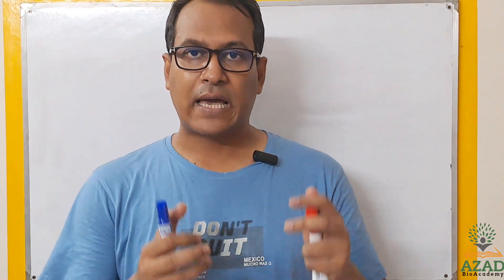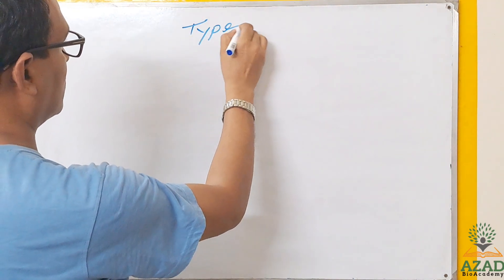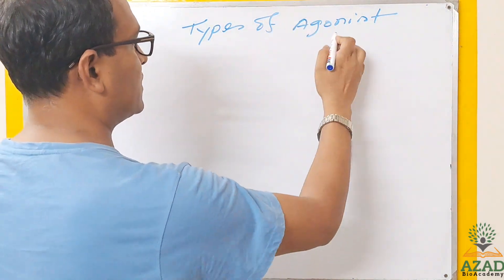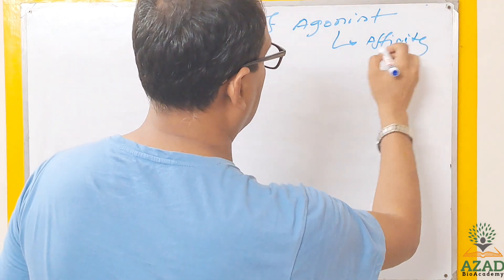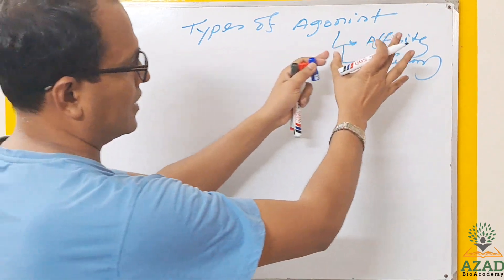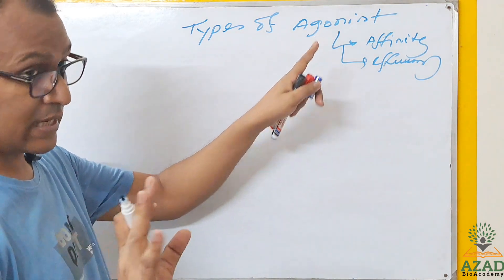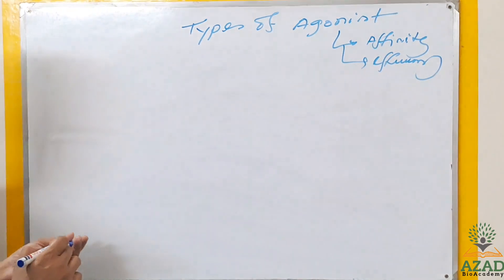Welcome to Ajat Bhai Academy. Today I will talk about types of agonists. The first lecture was related to agonists and antagonists, and this second lecture is related to just completely types of agonists. Agonists have two basic characters: it must have affinity and efficacy. If these two criteria are fulfilled by any substance, that can be considered as an agonist.